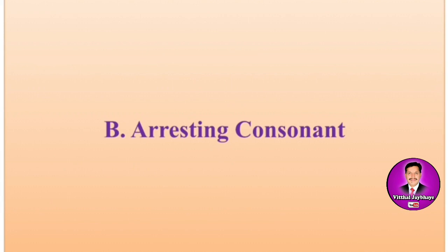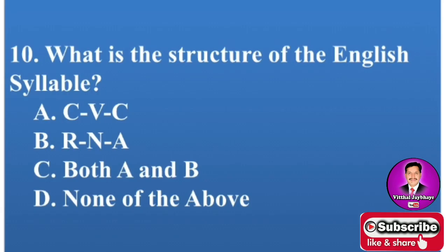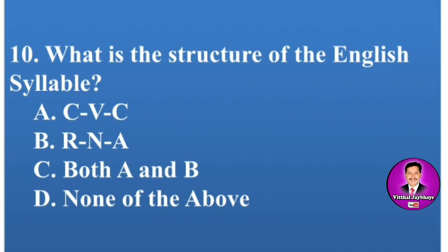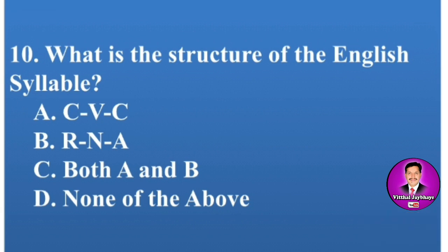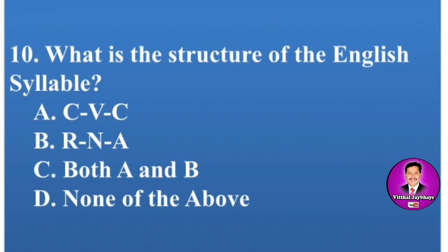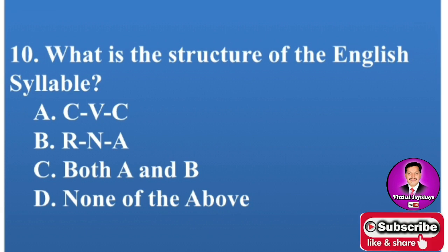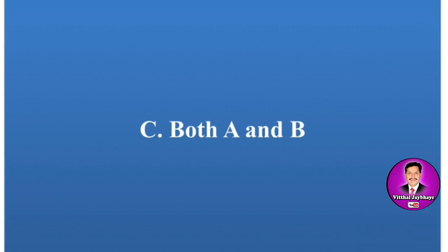Remember, all these MCQs are very crucial and useful for all sorts of competitive examinations. Next MCQ: What is the structure of the English syllable? The correct answer is both A and B — meaning C (consonant), V (vowel), C and R, N, A.